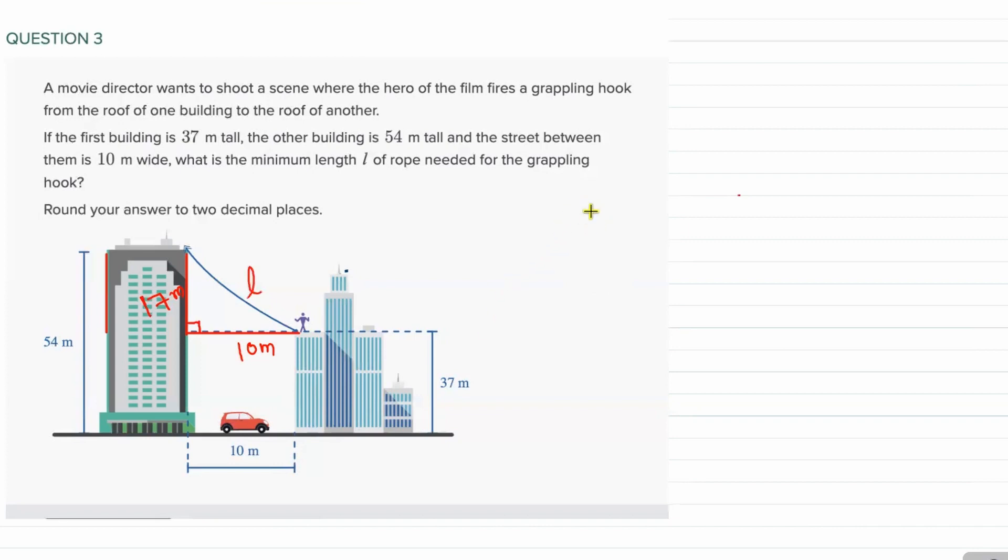So we can use Pythagoras theorem, that is A squared is equal to B squared plus C squared. Here at the place of A squared, which is supposed to be the longest side, is going to be length of the rope, right? So L squared is equal to 54 minus 37, that was 17 squared, plus 10 squared.